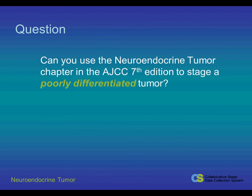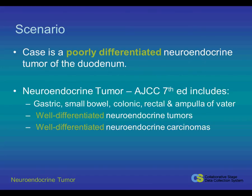Now the question is: can you use the Neuroendocrine Tumor Chapter in the AJCC 7th Edition and the corresponding Collaborative Stage Neuroendocrine Schemas to stage a poorly differentiated neuroendocrine tumor? The scenario we have is a case that is a poorly differentiated neuroendocrine tumor of the duodenum.